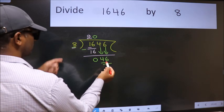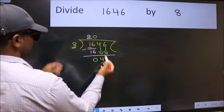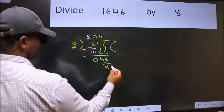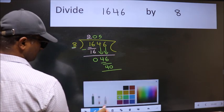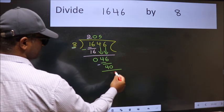A number close to 46 in the 8 table is 8 times 5, which is 40. Now, we subtract. We get 6.